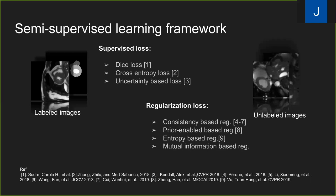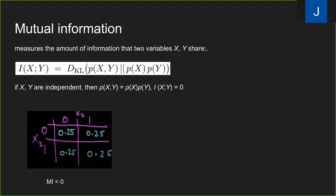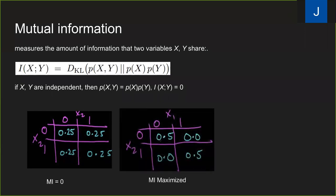Before diving in, mutual information has been utilized in self-supervised learning and deep clustering. This is the first time to involve it in semi-supervised segmentation. Mutual information is an information metric that measures the amount of information between two variables. Here we show some toy examples: if one variable has no impact on the other, the mutual information between the two is zero, while if one variable can be determined by the other, the mutual information is maximized.